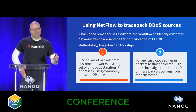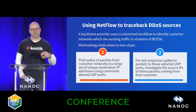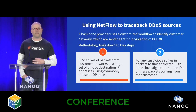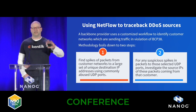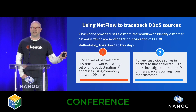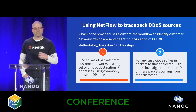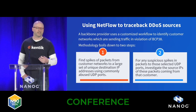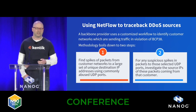Going back to that conversation with Aaron a couple of NANOGs ago, we were talking about how he was using NetFlow analytics to identify spoof traffic. His methodology boils down to two steps. The first step is to identify, from customer interfaces, where there are a lot of packets going to a lot of destination IP addresses using commonly abused utility ports. That alone doesn't confirm spoof traffic, but you use that to then dig further into those cases — looking at the purported sources of the traffic and whether that makes sense given the customer.